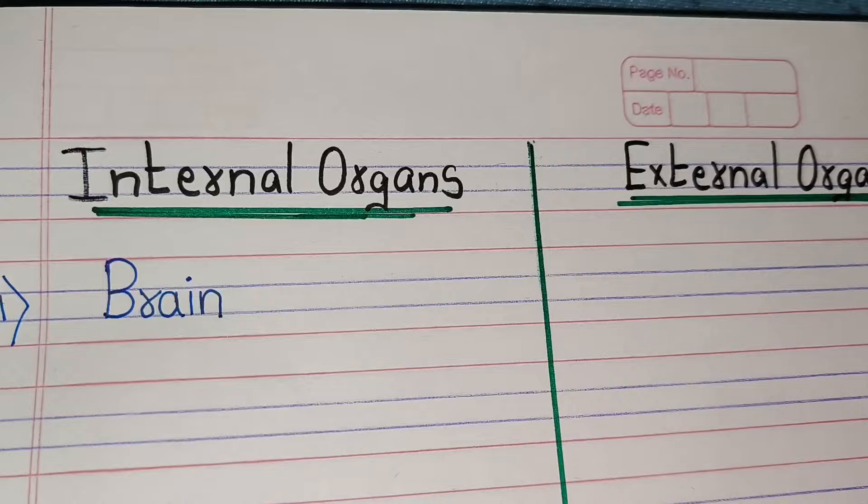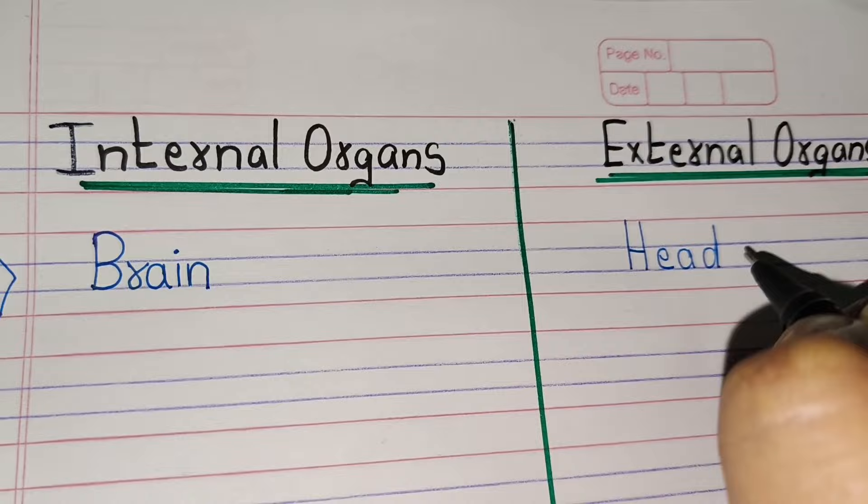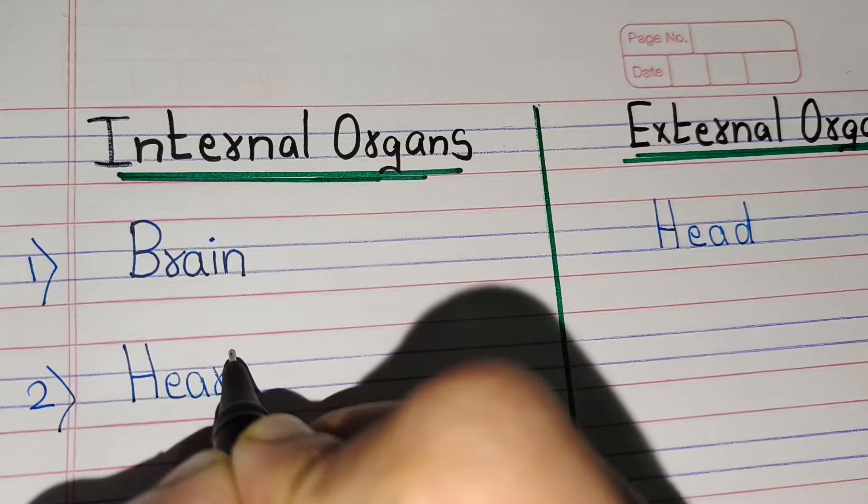First, internal organ name: brain. And external organ name: head. Second, internal organ name: heart. And external organ name: eyes.